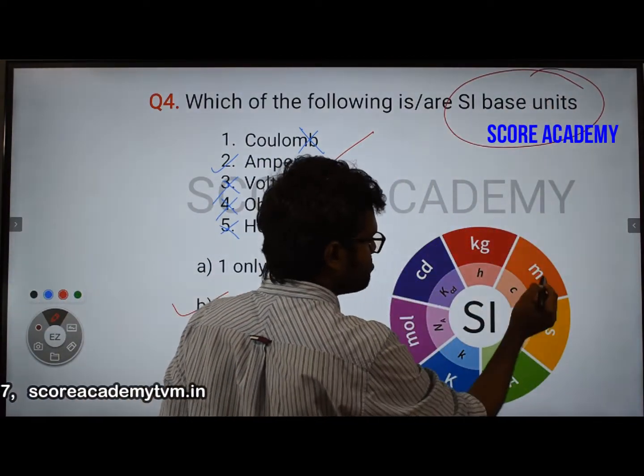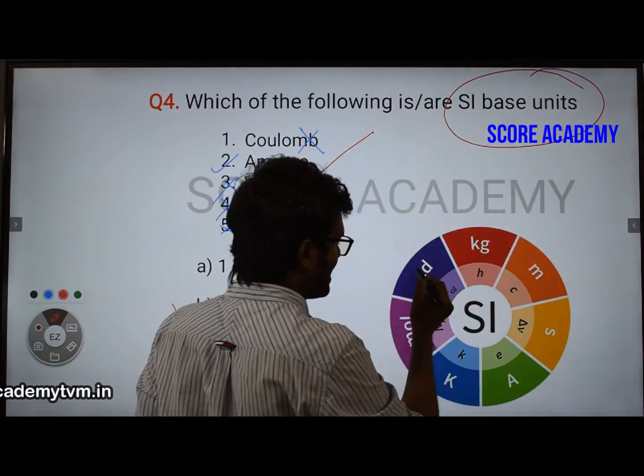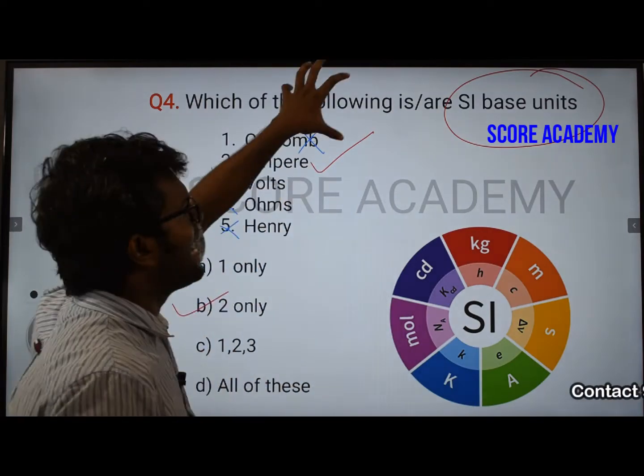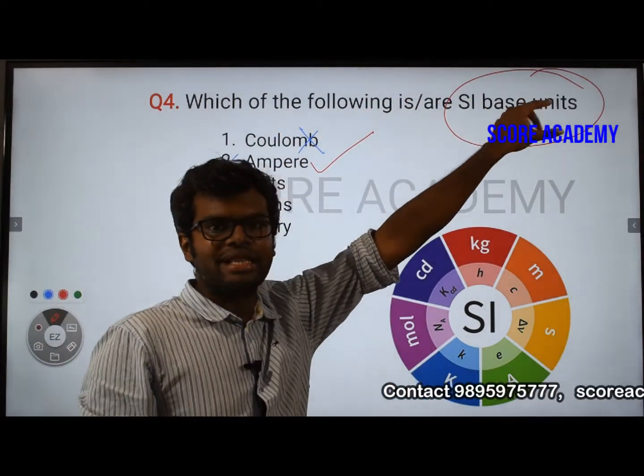Ampere, seconds, meter, kilogram, candela, mol, kelvin — these are the seven SI base units. These are the base quantities.